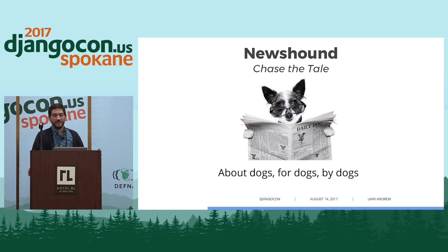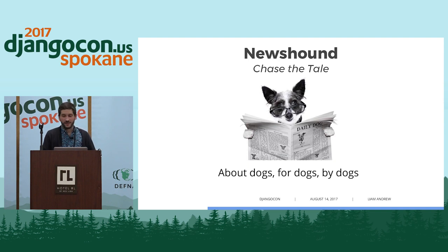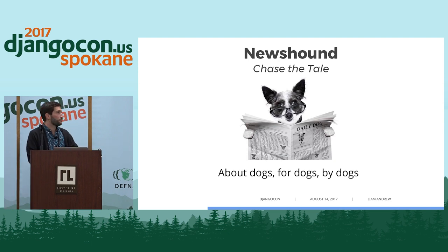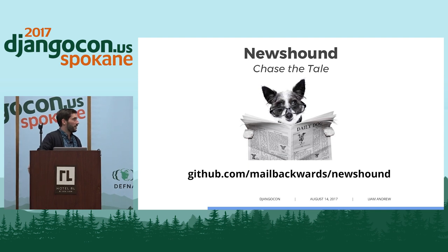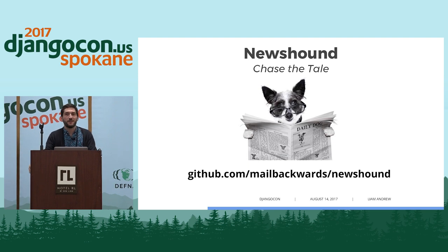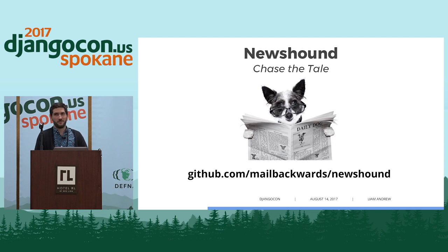We're going to be using an example site called Newshound — it's a blog by dogs, for dogs, and about dogs. It also has a database of dog breeds scraped from the American Kennel Club. You can follow along at github.com/mailbackwards/Newshound. There will be examples there of everything I'm about to show. I apologize in advance — they're extremely contrived examples; I ran out of ideas for how to talk about dogs.